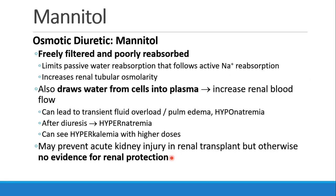The other unusual diuretic that we'll discuss here is mannitol. Mannitol is an osmotic diuretic. It is freely filtered into the renal tubule and poorly absorbed. So once it enters into the renal tubule, because it's osmotic, it will draw water into the renal tubule and keep it there. So it limits the passive water reabsorption that normally follows sodium, and it increases osmolarity of the renal tubule. Mannitol has another effect, which is that it draws water from cells into the plasma. So while it's still in the intravascular space, it draws water into the plasma. It increases renal blood flow by increasing intravascular volume. So we see an interesting thing with this diuretic — initially we see a transient fluid overload. You could even get pulmonary edema, and because it's pulling free water, we can see a dilutional hyponatremia.